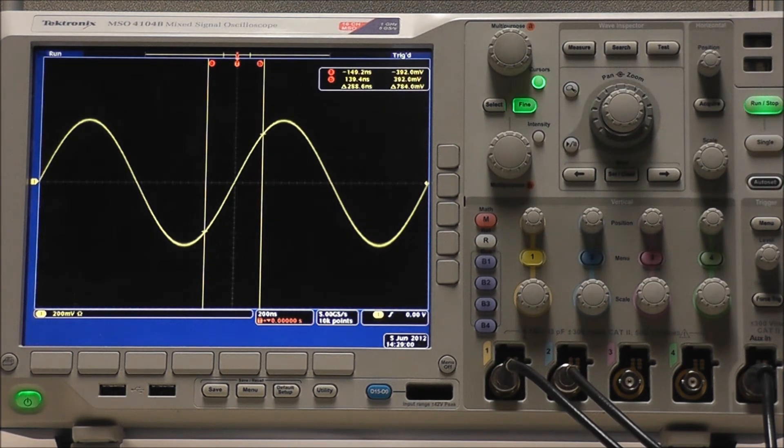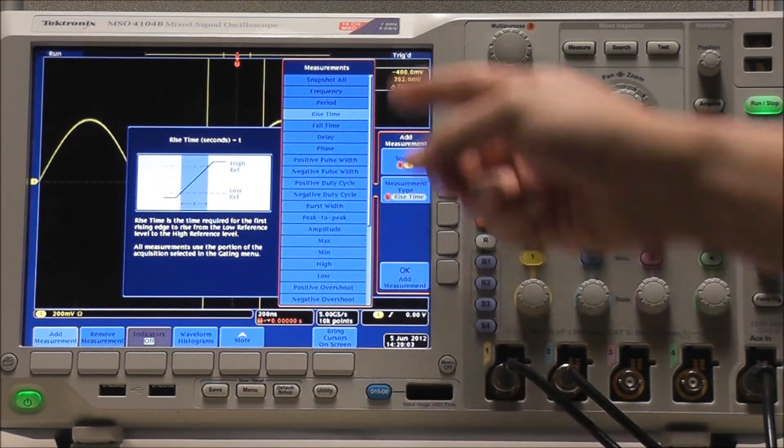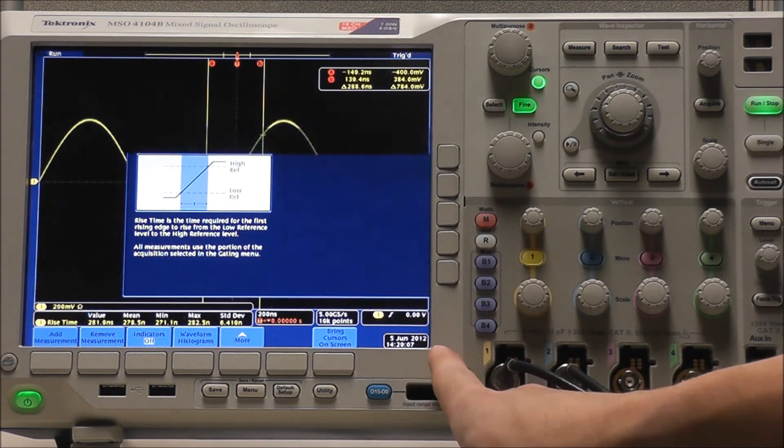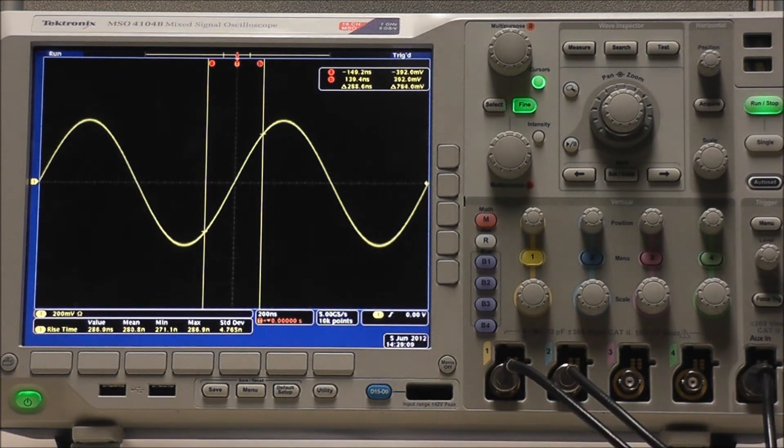Another way to perform a measurement on an oscilloscope is to use the measurement feature. And as you can see, we have a wide array of options to choose from. Using rise time as an example, we can see a side-by-side comparison between cursor measurements and automated measurements.